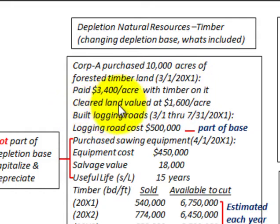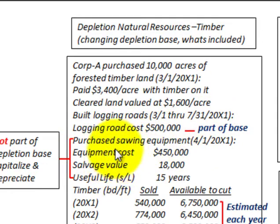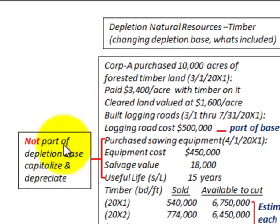If the land was valued as cleared land with no timber on it, it would be valued at $1,600 an acre. They also built logging roads from March 1st through July at a cost of $500,000, and that's going to be part of our depletion base. They also purchased some sawing equipment, but that's not part of our depletion base — it would just be capitalized and depreciated separately.